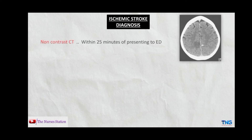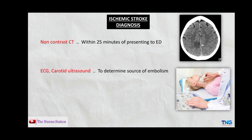For diagnosis of ischemic stroke, the first evaluation is a non-contrast CT scan, which should be performed within 25 minutes or less from when the patient presents to the emergency department. This is used to determine if the event is ischemic or hemorrhagic, as the type of treatment depends on the type of stroke. We can also use ECG or carotid ultrasound to determine the source of embolism, and CT angiography, MRI, and MR angiography of brain and neck vessels to determine the patency of blood vessels supplying the brain.